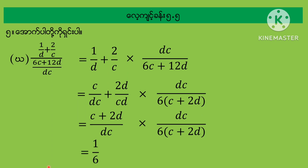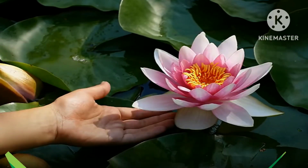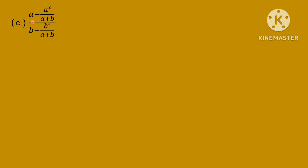You can see that 1 by 6 is equal to 1 by 6. A minus A square by E plus B, by B minus B square by E plus B, B minus B square by E plus B, by B minus B square by E plus B, minus B square by E plus B.